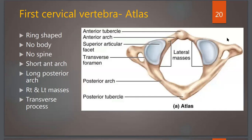The atlas has an anterior tubercle, anterior arch, superior articular facet, posterior arch, posterior tubercle, and lateral masses. The transverse process shows the foramen transversarium giving passage to the vertebral artery. The superior articular facet articulates with the occipital condyles of the skull bone to form the atlanto-occipital joint.